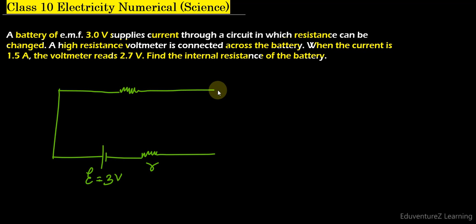Now read the question, you will understand what we have done here. So we have taken a battery of emf 3 volt which supplies a current through the circuit, means in this circuit a current I is flowing, and which resistance can be changed.